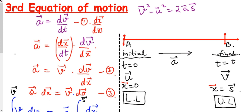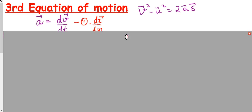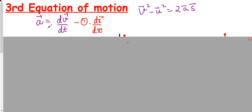The third equation of motion is v² - u² = 2as. The introduction is the same. We need to derive a relation between velocity, acceleration, and displacement — with no time involved. Note: all these equations are valid only when acceleration is uniform (constant). For example, in free fall, acceleration is always g = 9.81 m/s² (or approximately 10 m/s²). These are equations for constant acceleration.